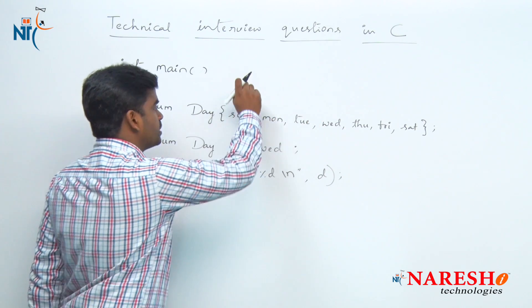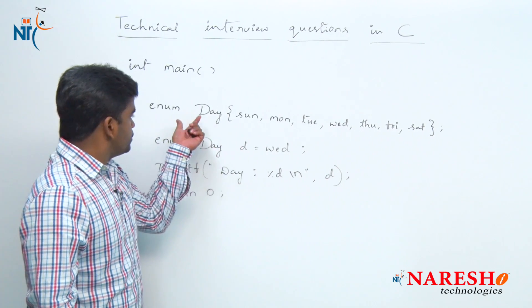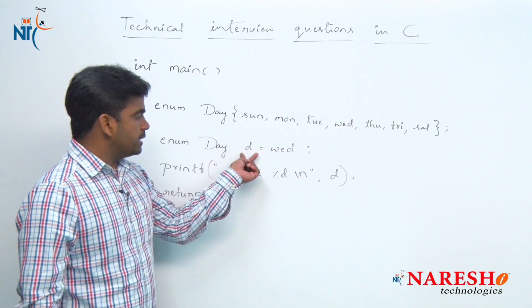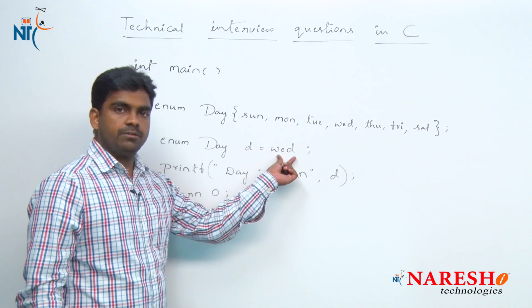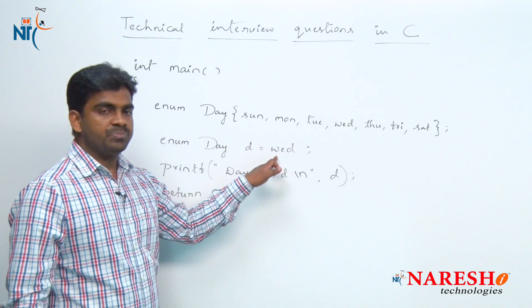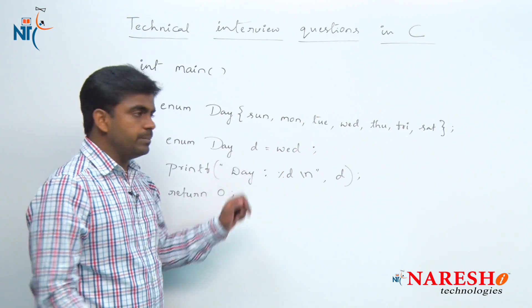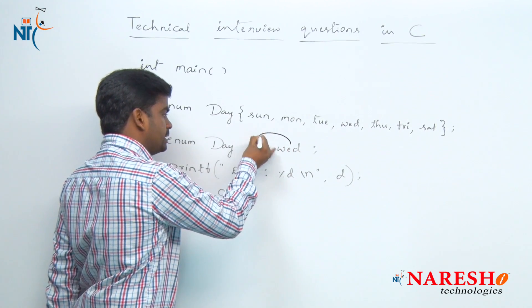So here in this program, no value to this one and whenever we are declaring the variable, the variable d is a variable and we are assigning the value. Directly one element we are assigning. Whenever we are assigning the element, the element corresponding value will be stored automatically into d.